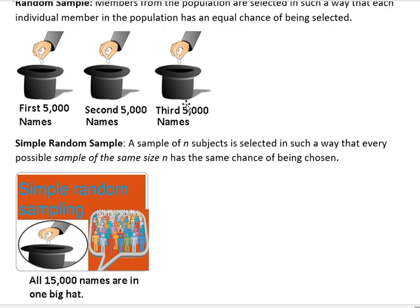So this random sample, everybody has an equal chance of being selected. In a simple random sample, all groups have a chance of being selected. We haven't limited the way that groups are being chosen.